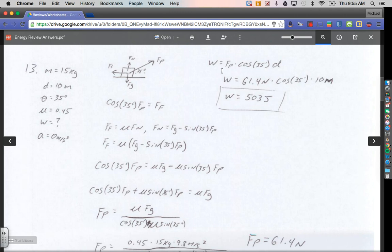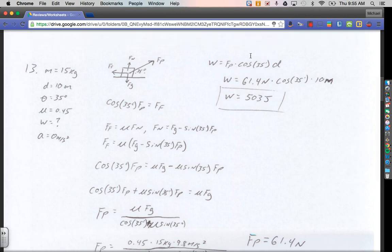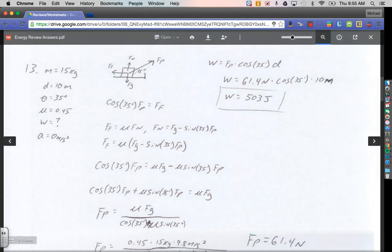So when I go back up here, my work equals force of pull cosine theta d. My angle is 35 degrees. So we just solved for the force of pull, 61.4 newtons, cosine of 35, times the distance, which is 10 meters. And I find out I've done 503 joules of work.